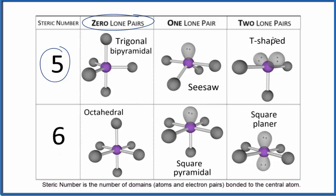If you're using the AXE notation to figure out the molecular geometry here, A is the central atom and then X, that'll be the atoms attached to it. And then E, that's the lone pairs. We don't have any lone pairs. So AX5 would be the molecular geometry.